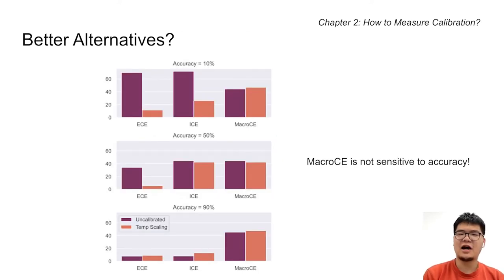In fact, ECE and ICE are very sensitive to the accuracy of the model. In this figure, ECE and ICE are very small at the highly accurate setting, even without calibration. This is in stark contrast with the low accuracy setting. In comparison, micro-CE stays stable regardless of the model accuracy.